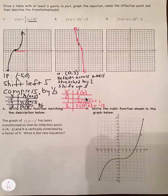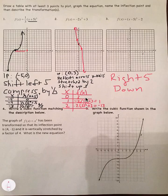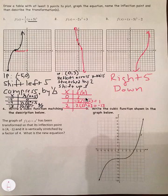I'm going to skip graphing number 3, but I'll tell you it shifts right 5 and down 2, so the inflection point should be at (5, negative 2). It's going to look something like this. Make sure you find and plot your points — always plot your points.